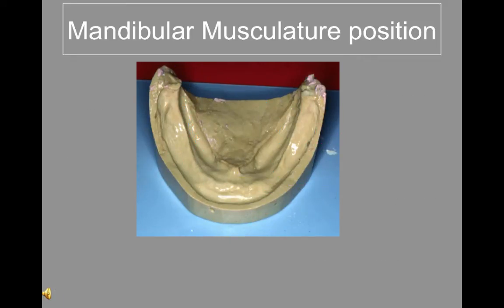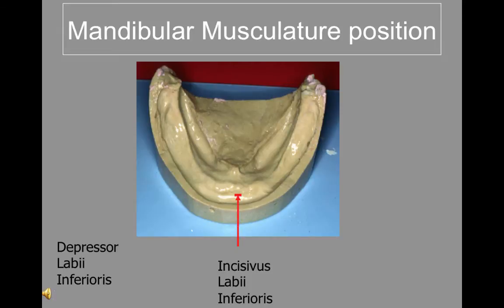Here are some relative muscles and their relationship to the position on the cast. Incisivus labii inferioris and depressor labii inferioris arise from the mandibular alveolar processes and blend with orbicularis oris. Both of these muscles present possible problems with denture extension. Mentalis elevates the skin of the chin and turns the lower lip outward. The mentalis reduces the depth of the lower vestibule when it contracts. This muscle is capable of dislodging the mandibular denture, especially when the residual ridge is at the same height as the origin of the muscle.